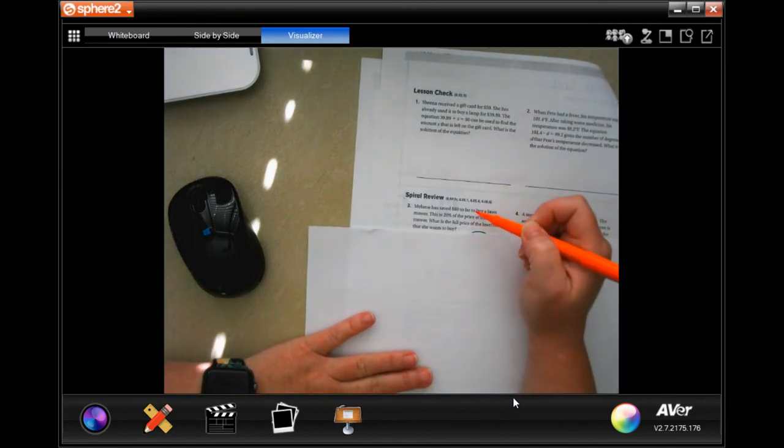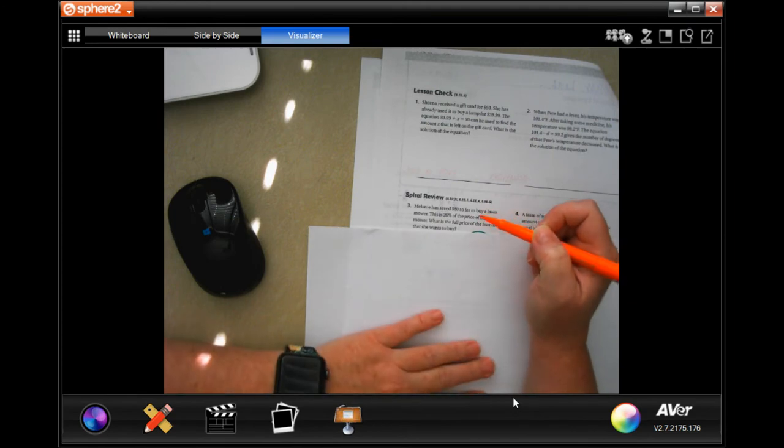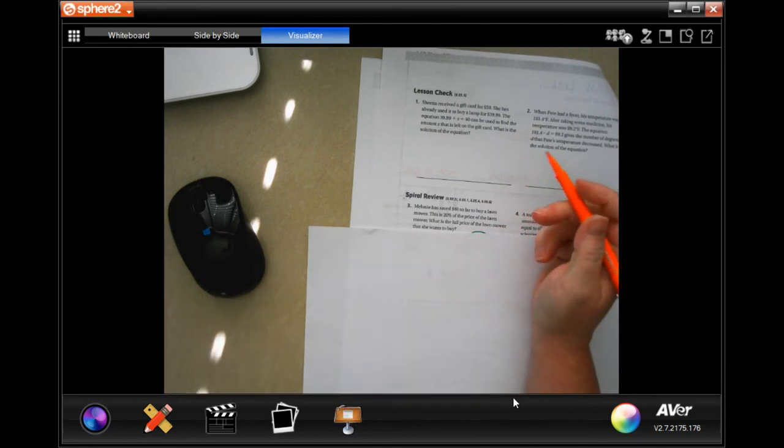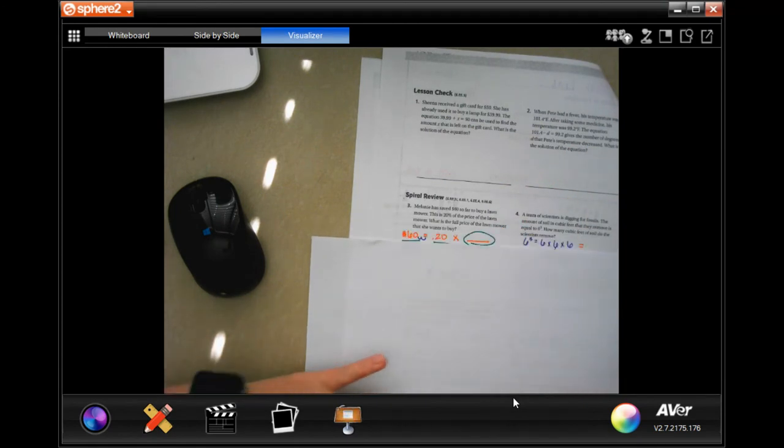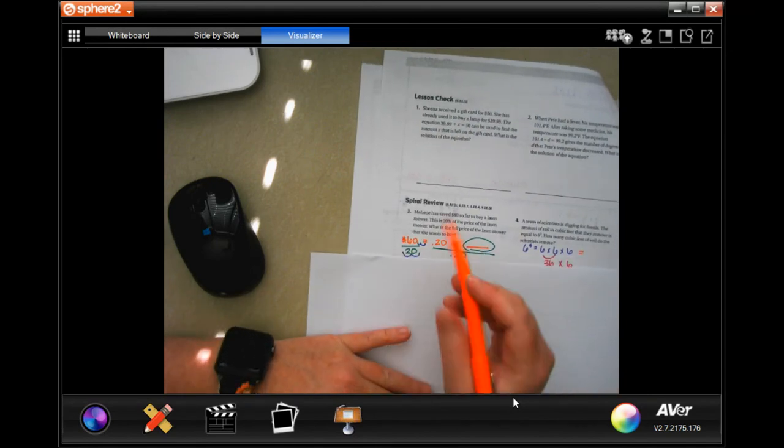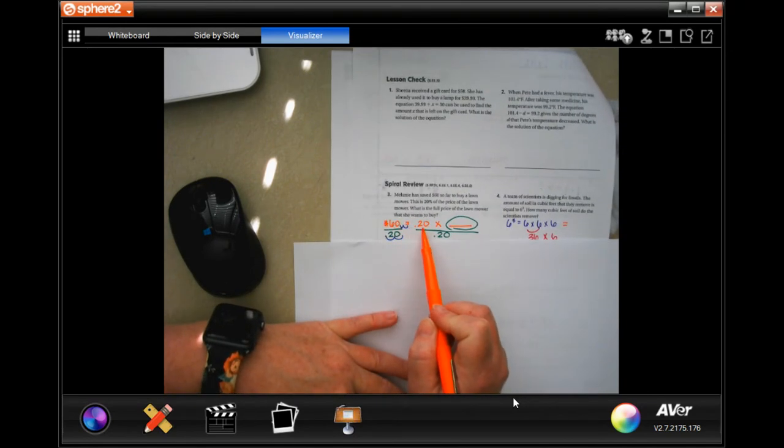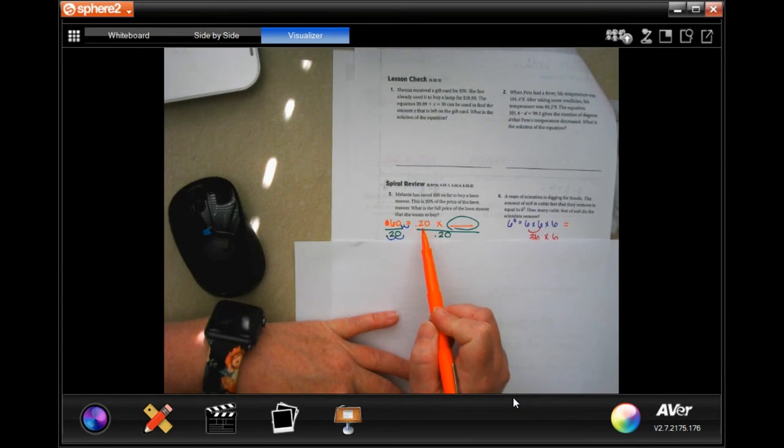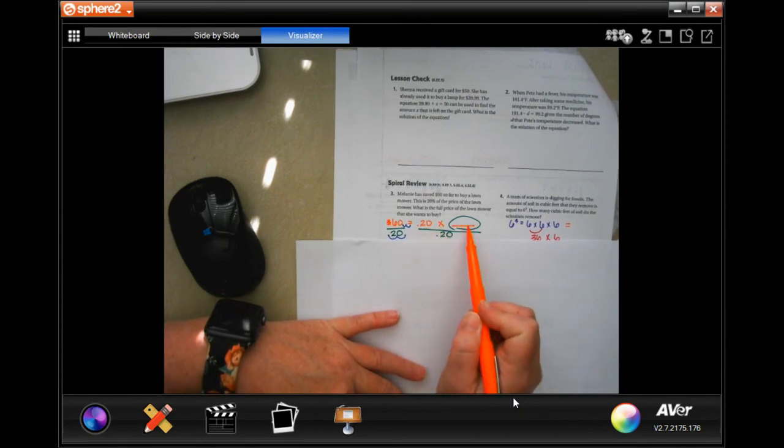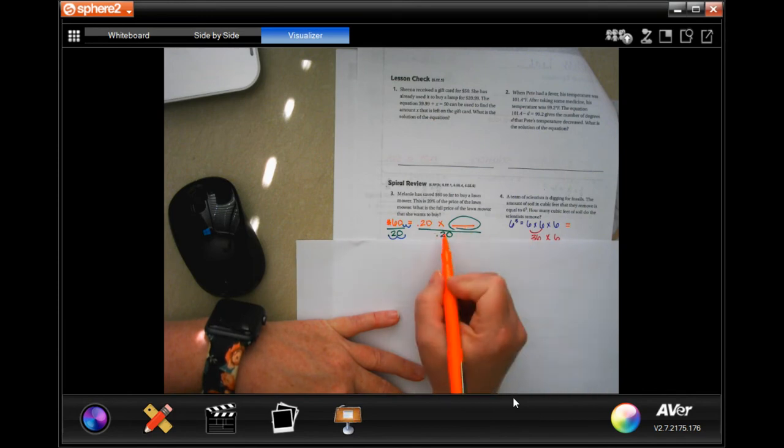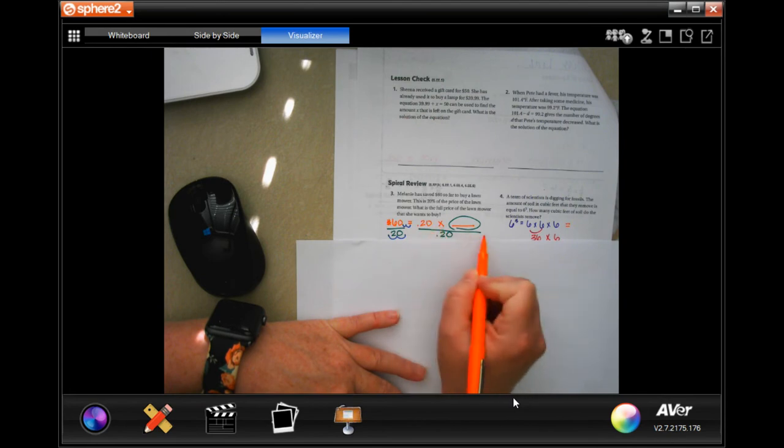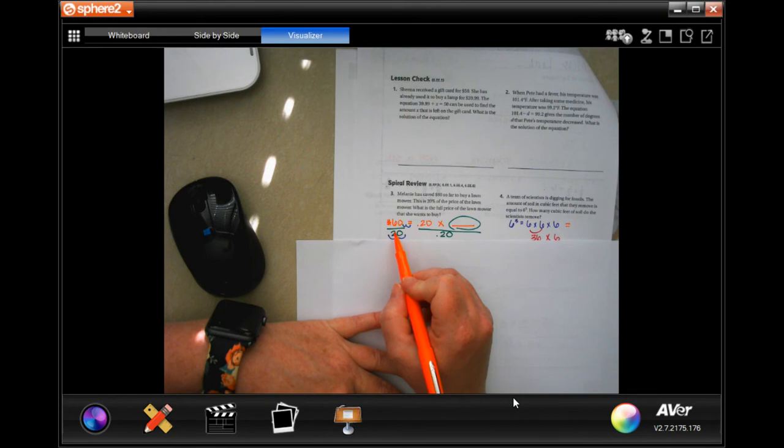This says Melanie saved $60 so far to buy a lawnmower. This is 20% of the price of the lawnmower. What is the full price of the lawnmower she wants to buy? So we know that $60 is 20% which 0.20 is the same thing as 20% of whatever number that is. That's the number we need to find. Well, in order to get it by itself, I have to do the opposite. This is multiplied. So I have to divide by 0.20 to get this alone to find out what it is. And whatever I do to this side of the equal sign, I have to do to this side.